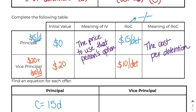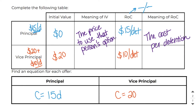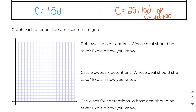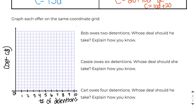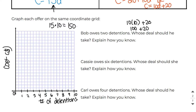Based on that we can write our equations. For the principal: c = 15d. For the vice principal: c = 10d + 20. Now we need to graph each offer on the same coordinate grid. The independent variable is number of detentions and the dependent variable is cost. Going up to 10 detentions: the principal reaches $150 and the vice principal reaches $120, so I'll scale the y-axis to 200 with each block worth $10.